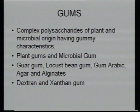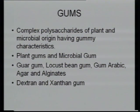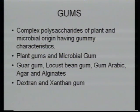Another example of polysaccharides is gum. Gums are also polysaccharides and can be available from microbial sources as well. There are two types: plant gums and microbial gums. Examples of plant sources include guar gum, locust bean gum, gum arabic, and alginates. Dextran and xanthan gums are from microbial sources. These provide functional properties — for example, in ice cream, sodium alginates are added as stabilizers so that water molecules do not grow into large ice crystals.